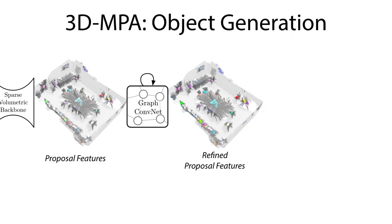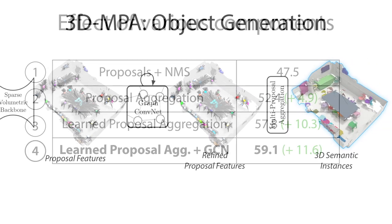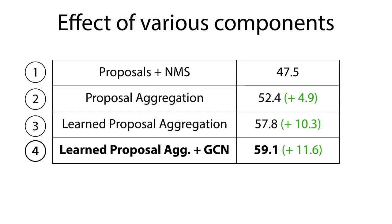Unlike previous methods, we do not perform non-maximum suppression, which can potentially discard correct predictions. Instead, we propose to aggregate multiple proposals based on jointly learned features. We experimentally demonstrate that aggregating proposals improves over non-max suppression.